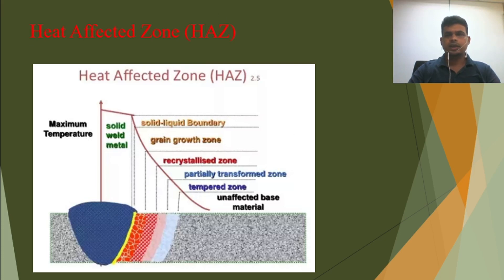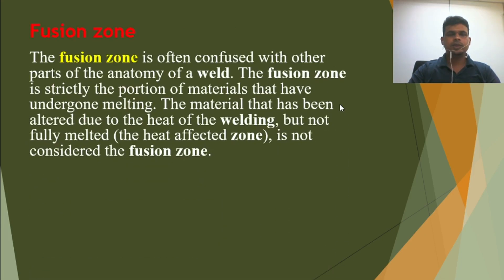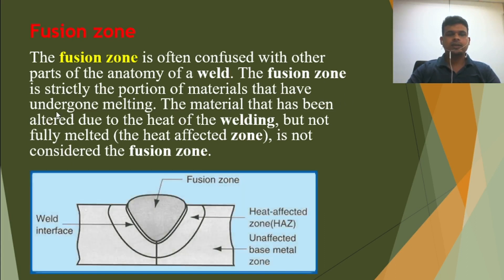I hope you understand from this explanation. If you still have doubts, you can ask in the comment section. Now let's look at the fusion zone. The fusion zone is often confused with other parts of the anatomy of a weld. The fusion zone is strictly the portion of metal that has undergone melting — the metal that has been altered due to the heat of welding. The heat affected zone is not considered the fusion zone. The fusion zone is the weld metal plus the fusion line up to where the metal has been fused and melted. The heat affected zone cannot be considered as the fusion zone.